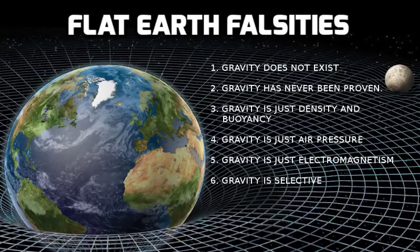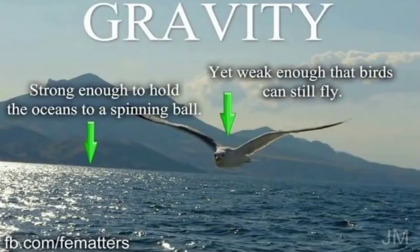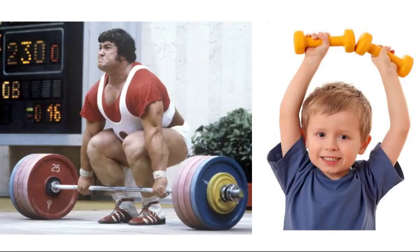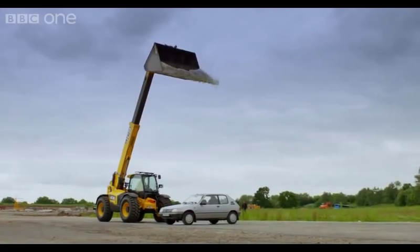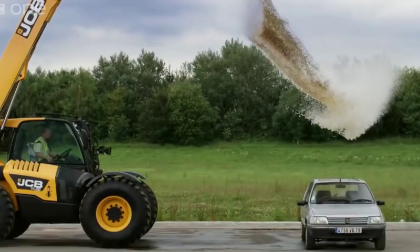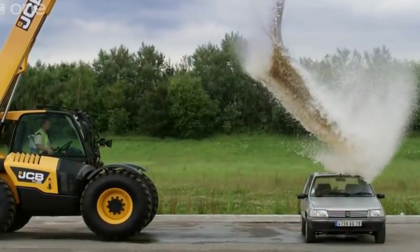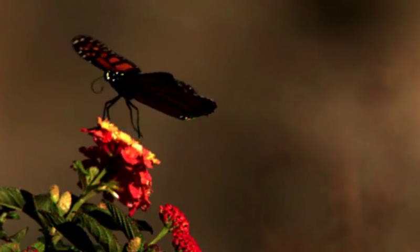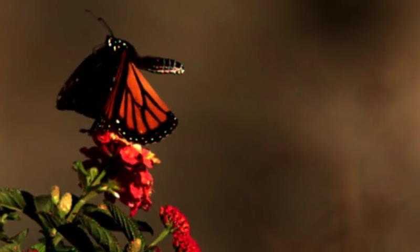Claim number six: gravity is selective. Flat earthers sometimes ask how can gravity hold the oceans but allow butterflies to fly, or why aren't we crushed if gravity is so strong. This is based on a misconception — they seem to think it is hard to hold heavy things down to the earth. No, that is backwards. It is easier to hold heavier things than light things. Heavy things like water react more strongly to gravity than light things. That is why you can easily pick up a baseball but not a car. Oceans are very heavy so they are pulled very strongly to the earth, while a butterfly is very light so it can easily fly by flapping its wings to create lift, counteracting gravity.